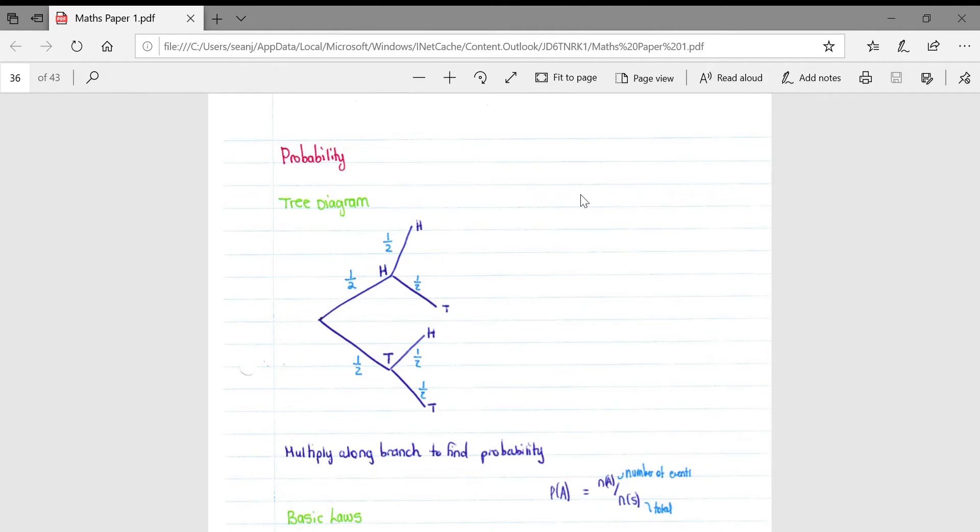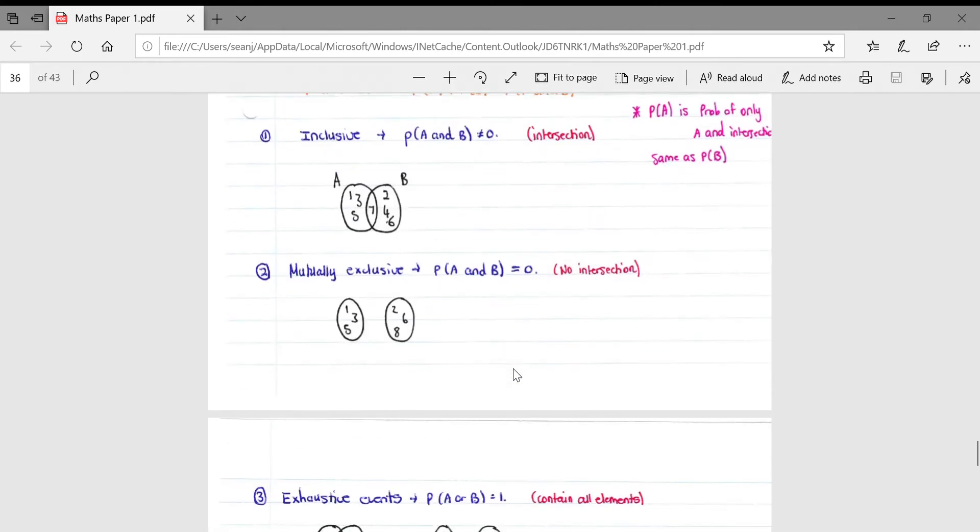This video covers the probability section of the mathematics syllabus. In understanding probability, it's important to understand how you can illustrate probability in your answers. There are two main methods in core maths: either through the use of a tree diagram or a Venn diagram.